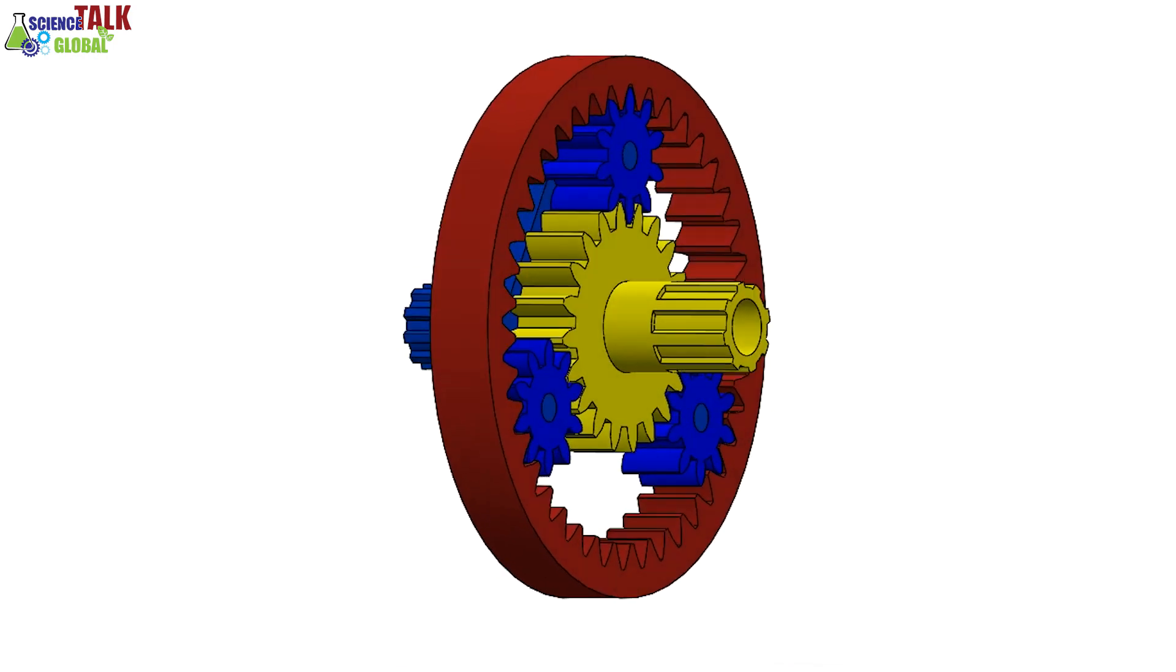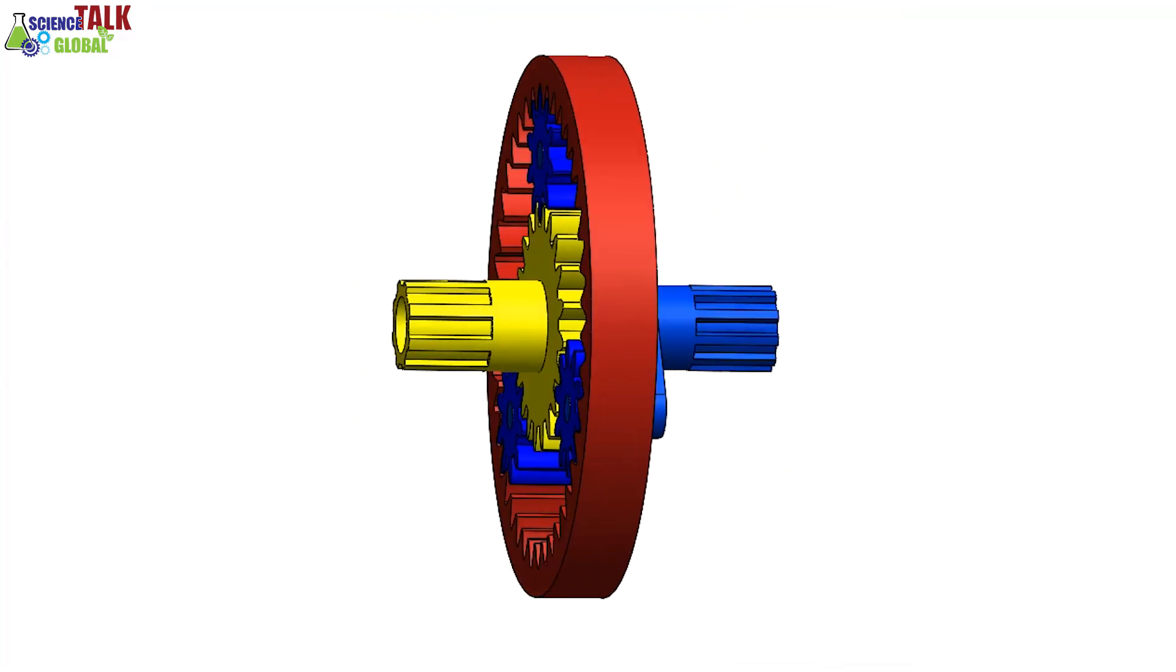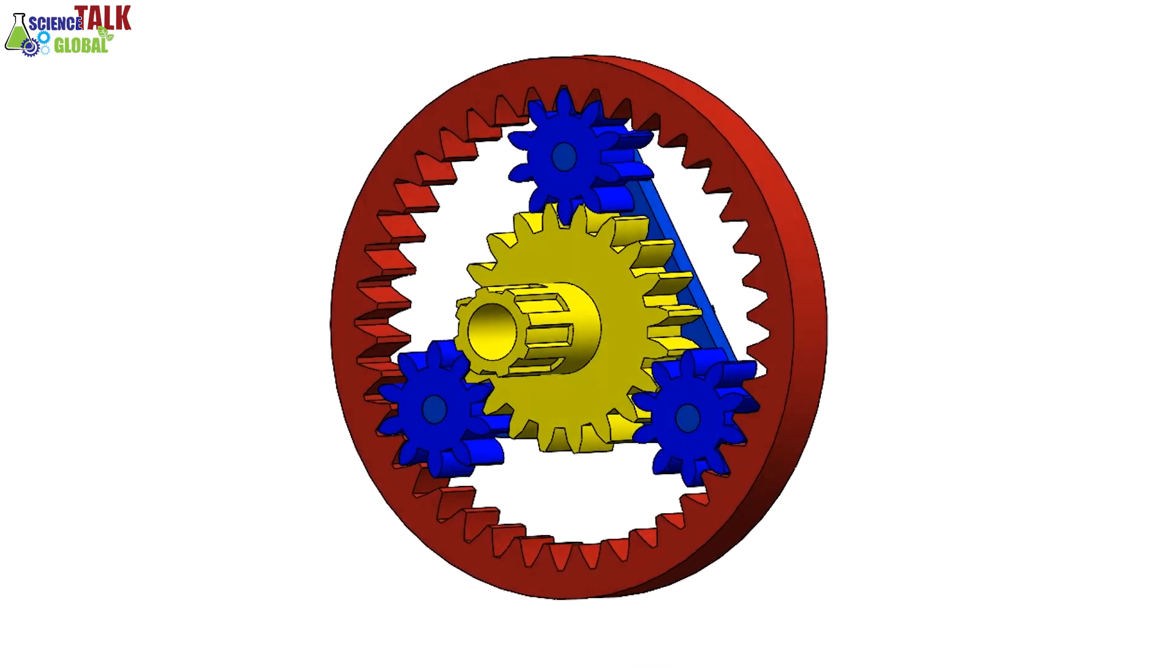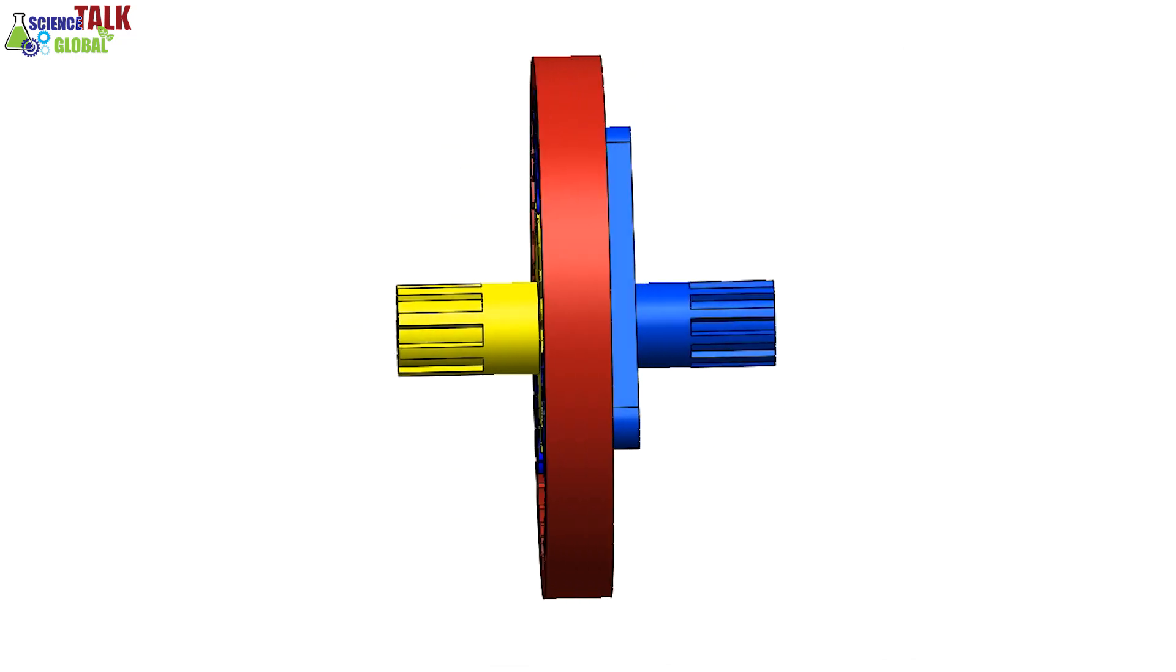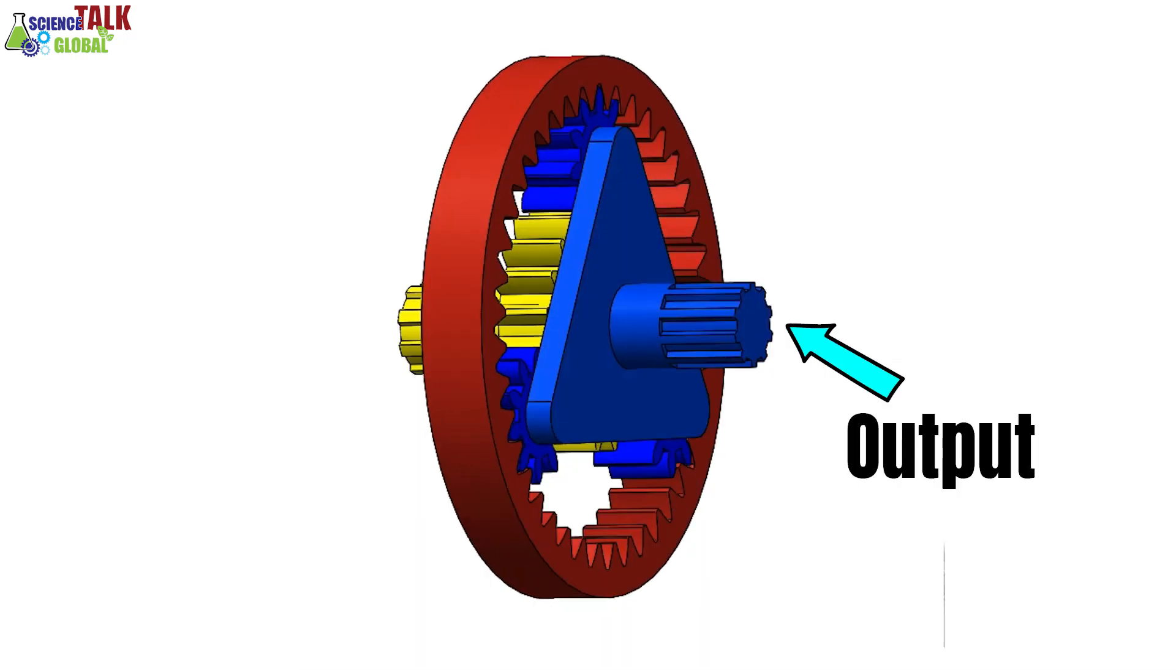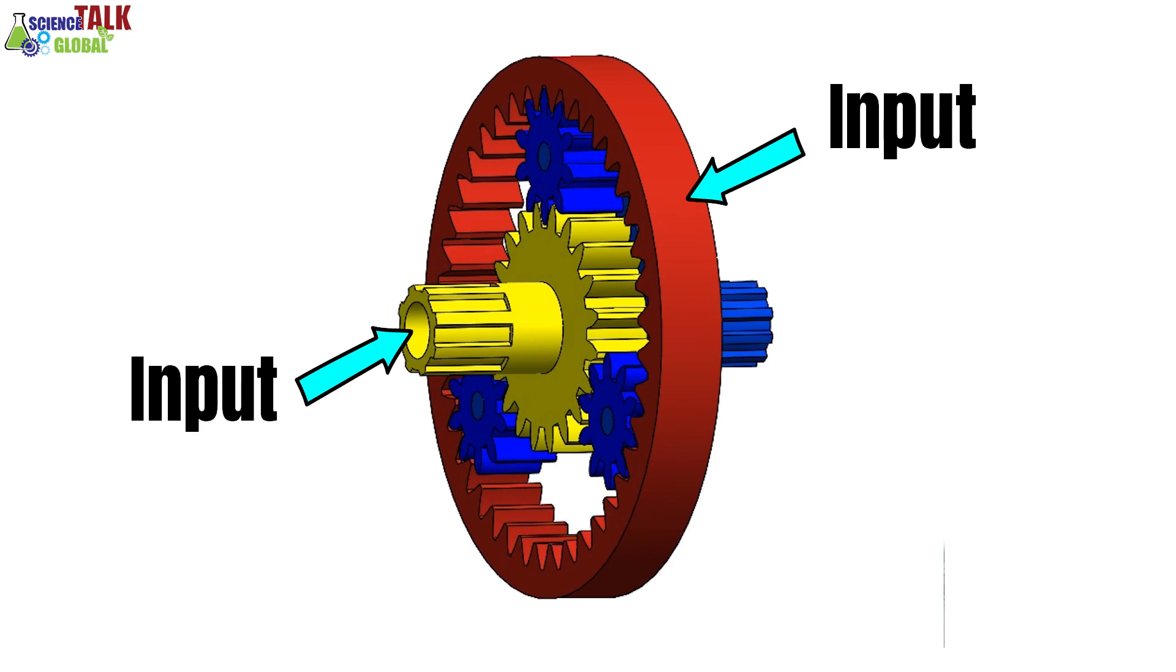There are two inputs for this gear train and the gear ratio depends on the angular velocities of the inputs. As an example, let's consider planet carrier as the output. Then the two inputs are the ring gear and the sun gear. When one gear becomes the output, other two become the inputs.